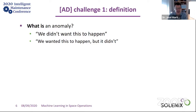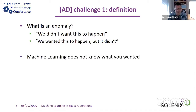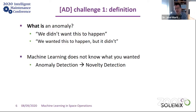From a machine learning point of view, it's hard to understand what it is you wanted to happen or not. So we slightly change the problem: instead of anomaly detection, we do novelty detection — finding what is unusual in our data. We found that more often than not, unusual behavior is the signature of an anomaly in the making.